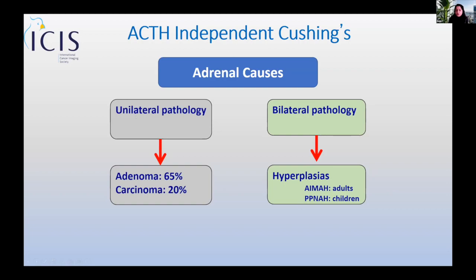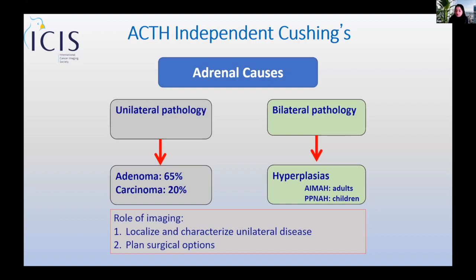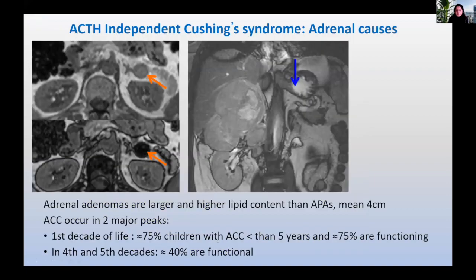The vast majority of ACTH-independent Cushing's is unilateral, making up about 80–85% of disease. The role of imaging is to localise and characterise the unilateral disease — specifically to distinguish between adenoma and carcinoma, as that determines the type of surgery. Adrenal adenomas causing Cushing's are actually larger, typically 2–4 centimetres when detected. They have all the features of a benign adenoma. MR is used more than CT when Cushing's is already known, and chemical shift loss on MR is very reassuring for a homogeneous lesion.